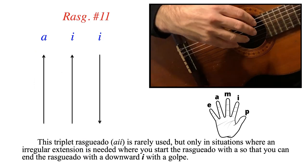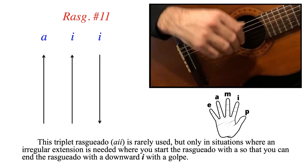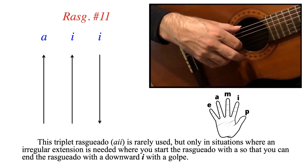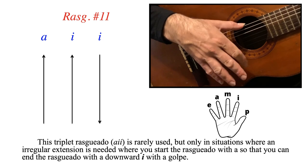Now rasqueado number 11. This one is not used as much as the other ones, but nonetheless, it is nice to have in your toolbox. So we've got a downward A, downward I, and an upward I.